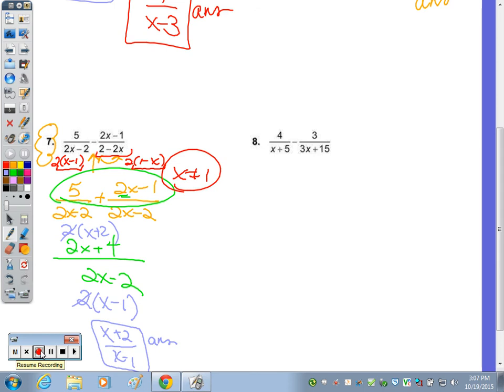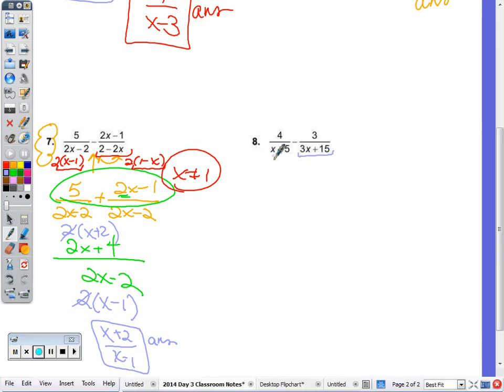So the last question, what can we easily do to this fraction to keep it the same value, but make it look like 3x minus 15 when it's x minus 5?